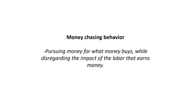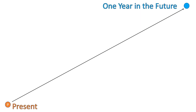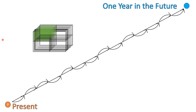Money-chasing behavior is favoring the control of money over creating the real wealth that money purchases. To grasp the magnitude of this effect, consider the following thought experiment. We exist in the present, and apart from natural disasters outside our control, what our world will look like one year into the future will depend on the decisions we make between now and then. Every economic decision between now and then is represented by a decision matrix.